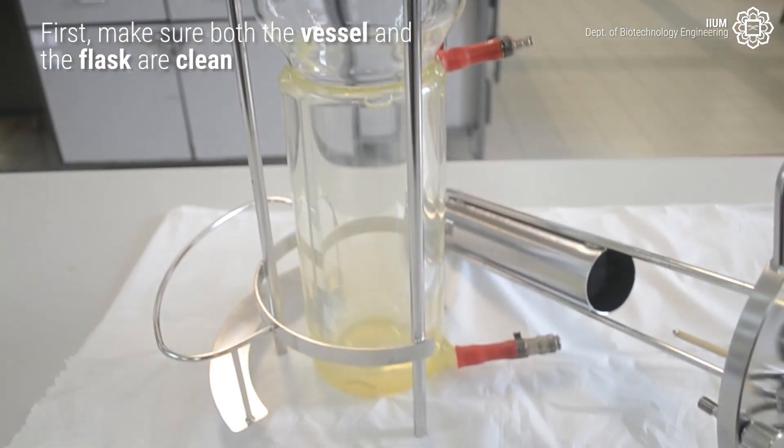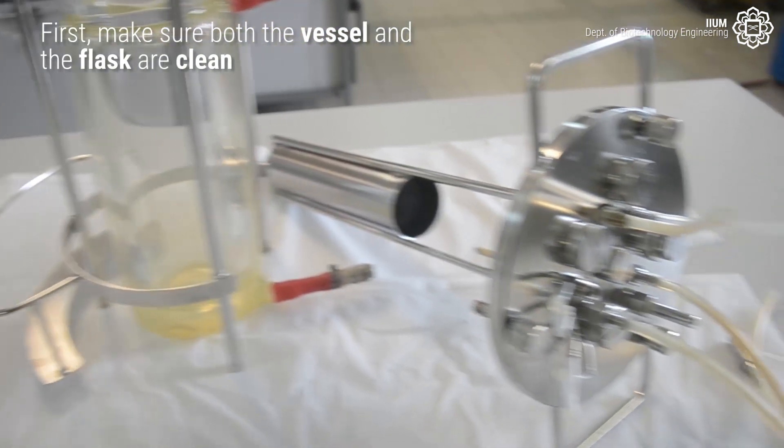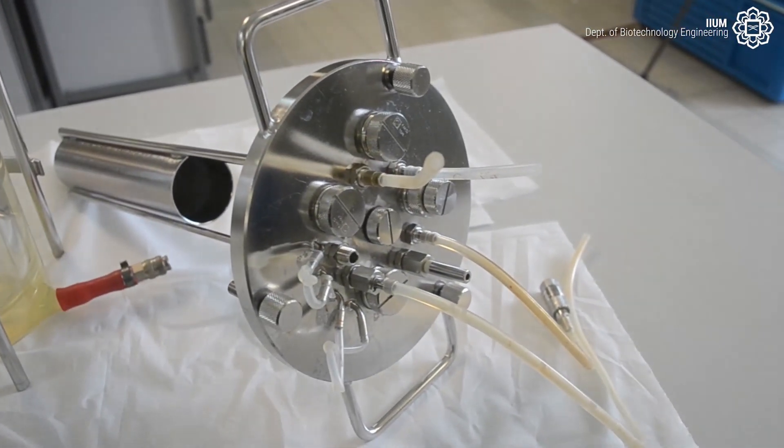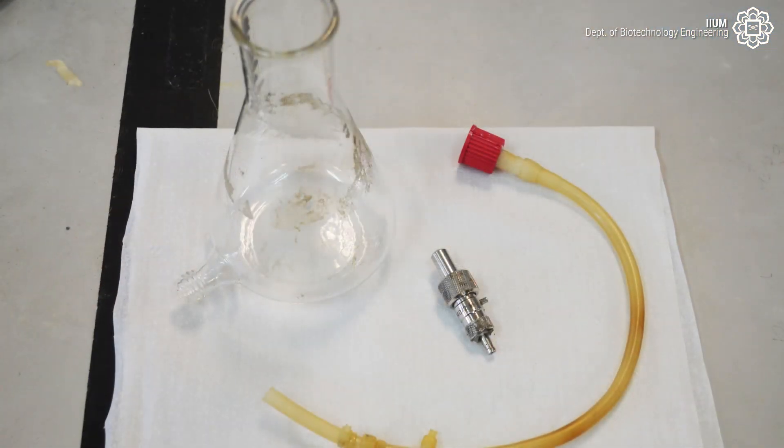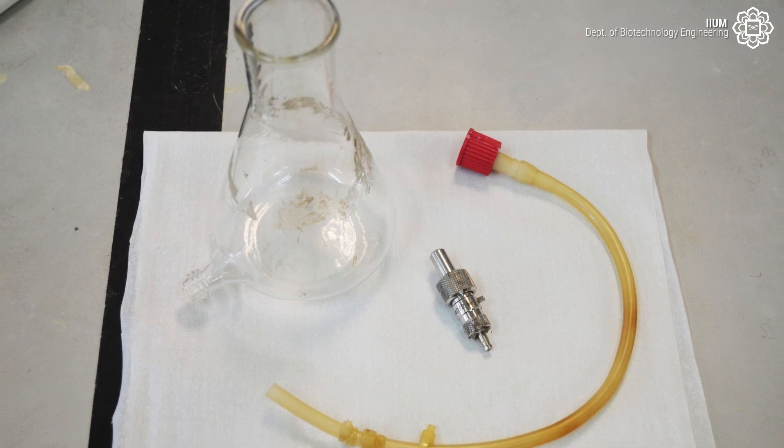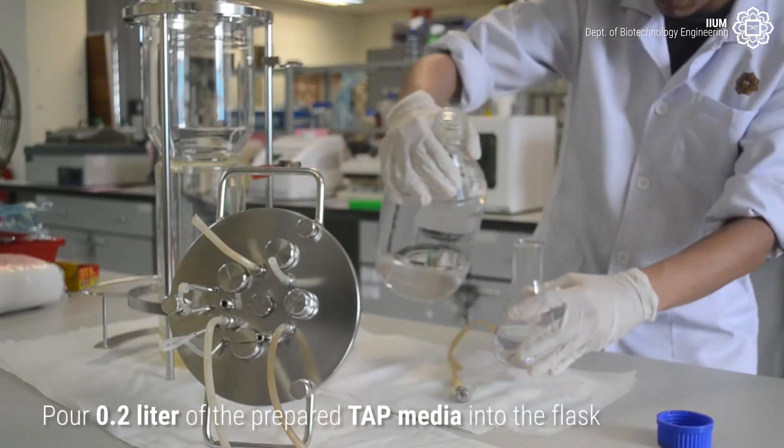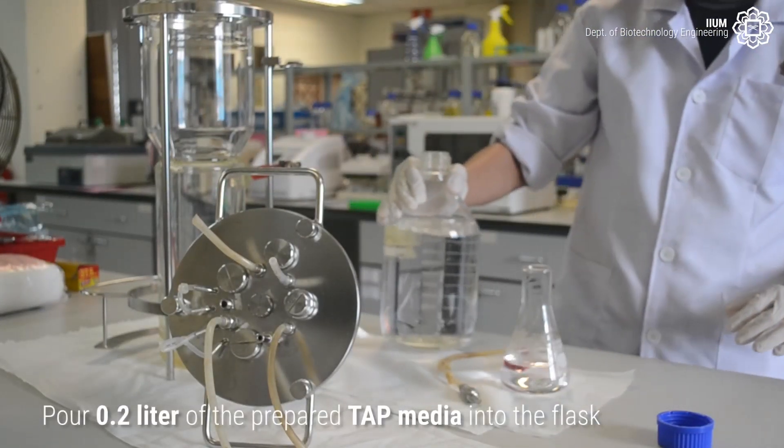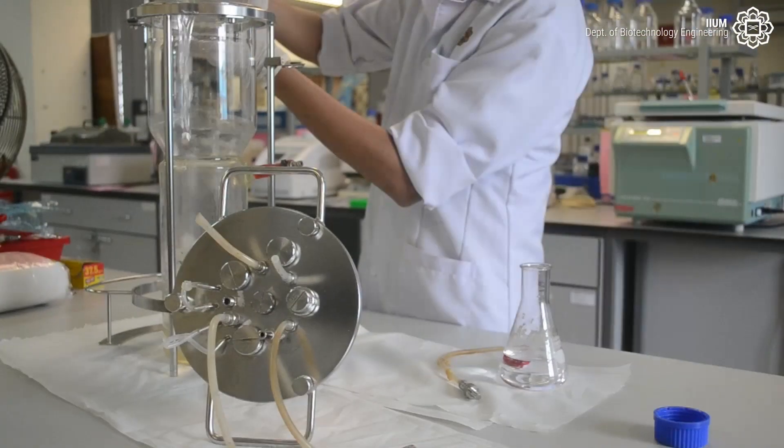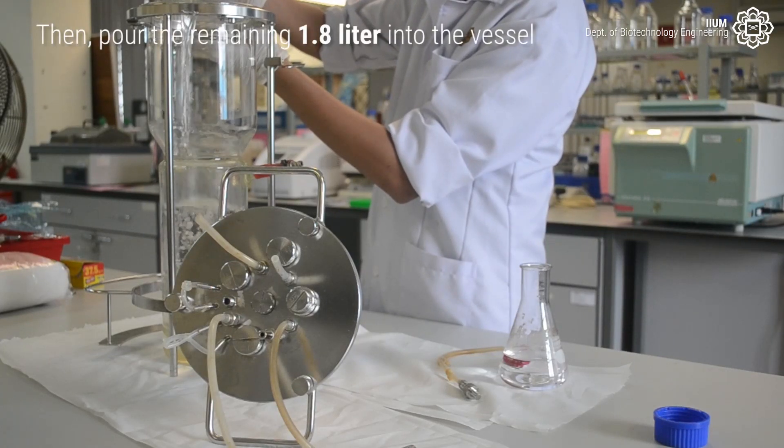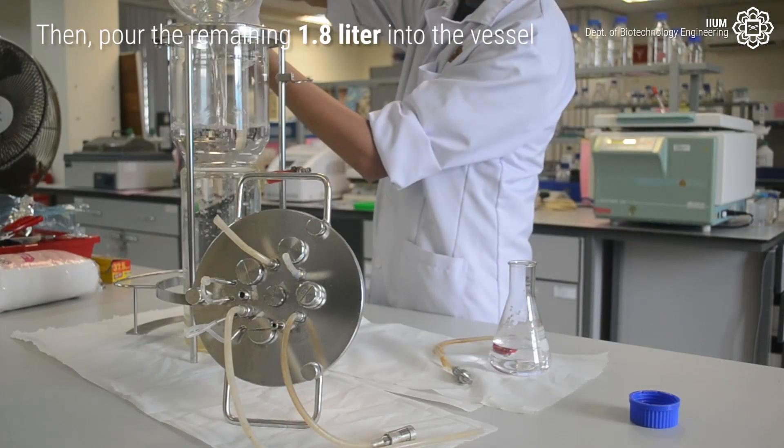First of all, make sure the vessel and the flask are clean. Pour 0.2 liters of the prepared tap media into the flask. Then pour the remaining 1.8 liters into the vessel.